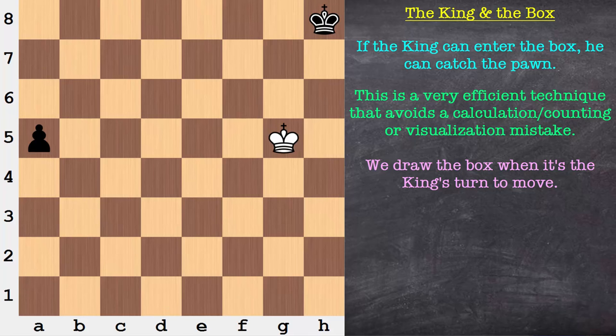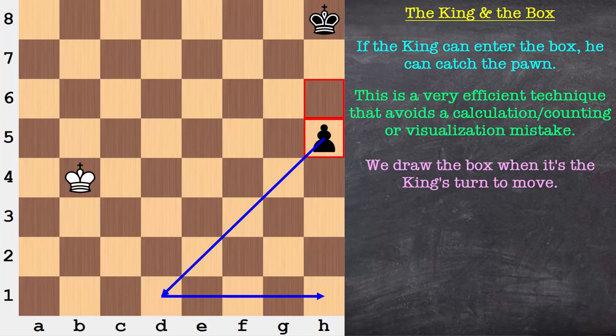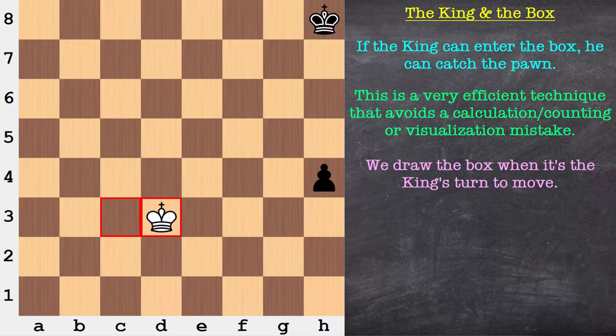Let's have a look at just one more example. This one right here, where it is now black to move. If you'd like to, go ahead and pause the video. Will the white king be able to catch the black pawn? Okay, the answer to this is no. Keep in mind, we go ahead and draw on that box when it is the king's turn to move. In this position, it's black on move. After h5, now we go ahead and draw on the diagonal and the box connected with it. Can the king enter the box? Unfortunately, he cannot. Therefore, he will not be able to successfully track down that pawn in time.